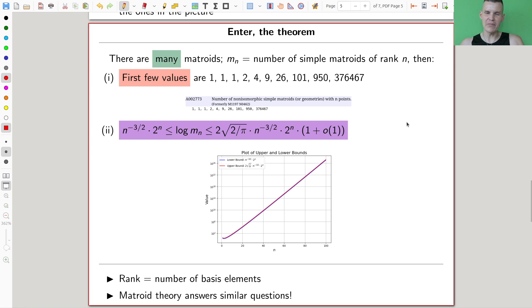And then there's this theorem, which I find surprising, because it kind of gives a really good estimate of how many matroids there are. So let's say there are many, many, many, many. But let's just say m_n is the number of matroids of rank n. And it starts off like this: 1, 1, 2, 4, 9. And it starts off really harmless.